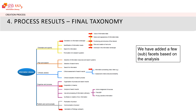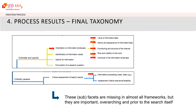And this is the result, visualized as a tree structure: five main facets and a number of sub-facets. We also adjusted a number of parts compared to the comparison analysis. For example, we added 'orientation towards the information landscape,' because it's important that students are aware of that landscape and the role they play in it prior to the search process — and this was not explicitly stated in most of the frameworks.